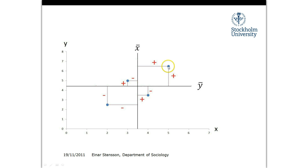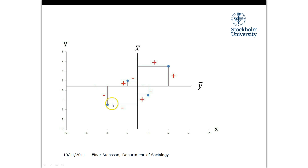When you look at the distances each observation has to the different means, we will get positive and negative values. For example, this observation is below the mean when it comes to its y value — it has a y value of about 2.3 and the mean is located at about 4.3, so it will have a negative value. It's below average, and it is also below average when it comes to x. Meanwhile, another observation is above the mean for both its x and y values, and another is above average for y and below average for x. These distances will be measured in the respective category scales — for example, if x is income, it will be measured in dollars or kronor; if this was age, the distance would be measured in years.